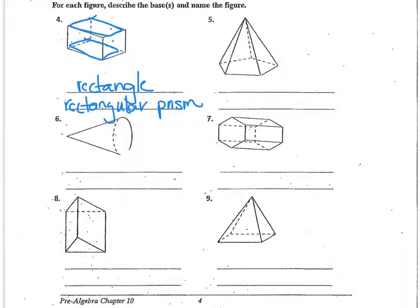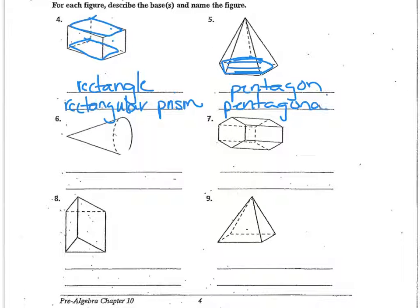And number five — if I trace the base, it has five sides, so it's a pentagon. So this figure is a pentagonal pyramid, since it only has one base.